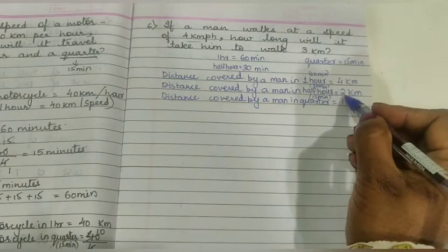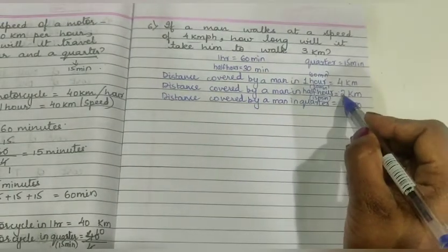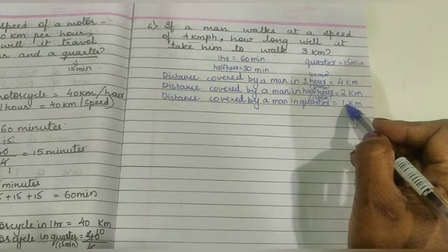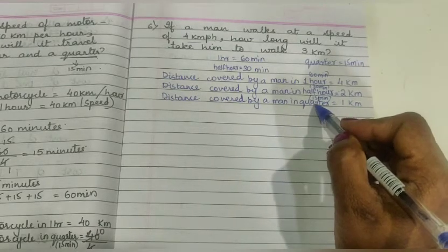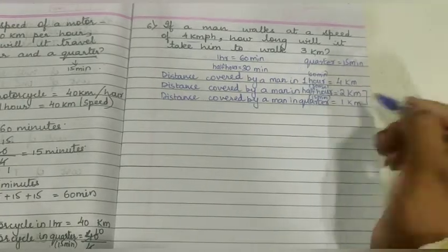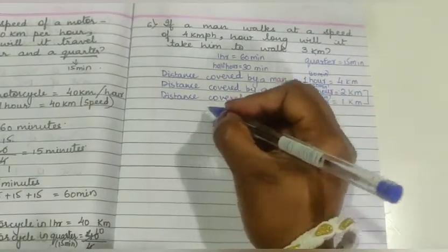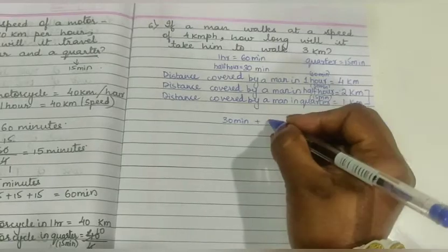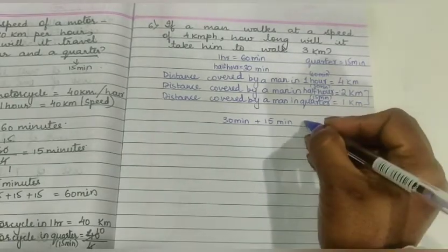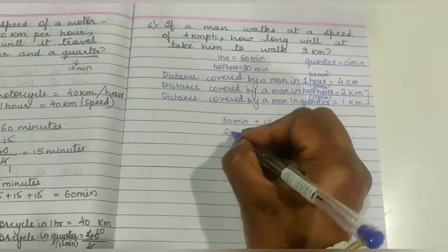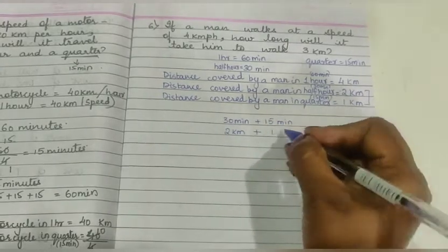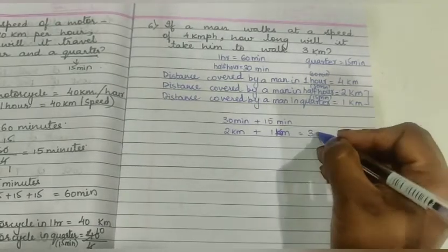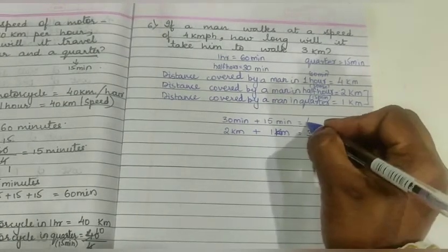Now we have to find 3 km. 2 km is covered in half an hour, meaning 30 minutes, and 1 km is covered in 15 minutes. So we have to find the answer for 3 km. So, 30 minutes plus 15 minutes. In 30 minutes it covers 2 km and in 15 minutes it covers 1 km. Total 3 km, and here 45 minutes.